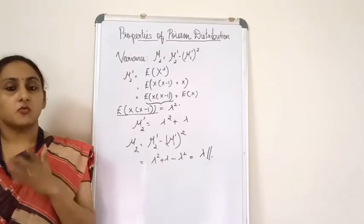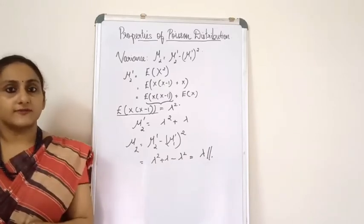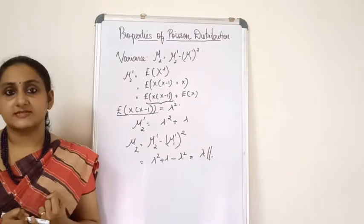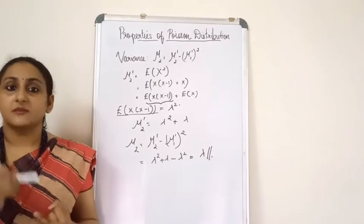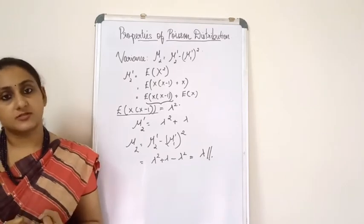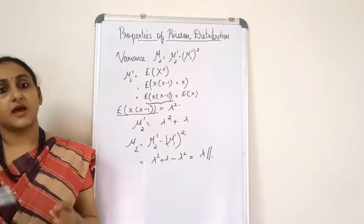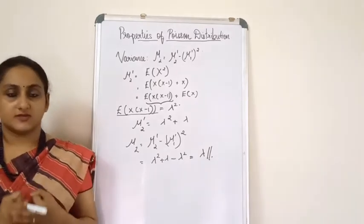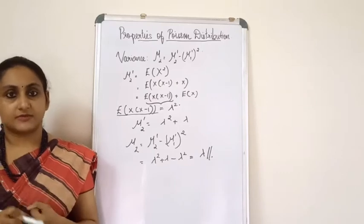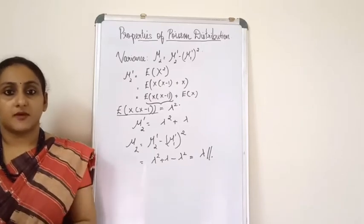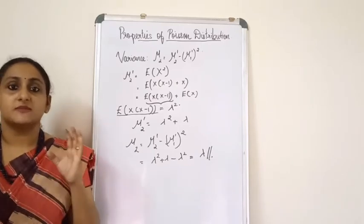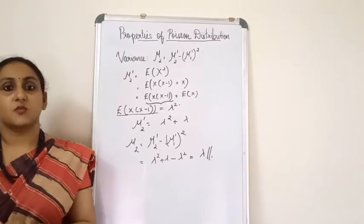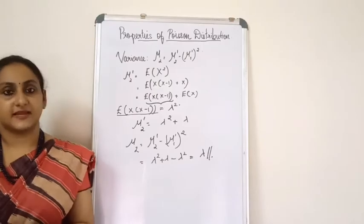The parameter of Poisson distribution is λ, the mean is λ, and the variance is also λ. So in a Poisson distribution, the mean and variance are both equal to λ.